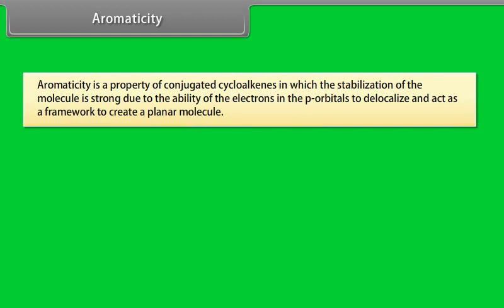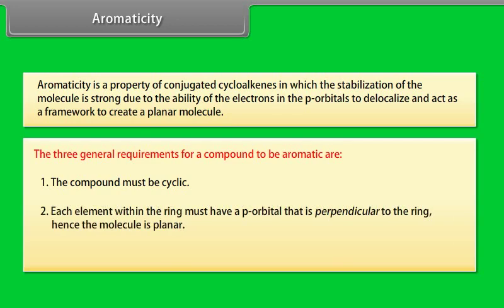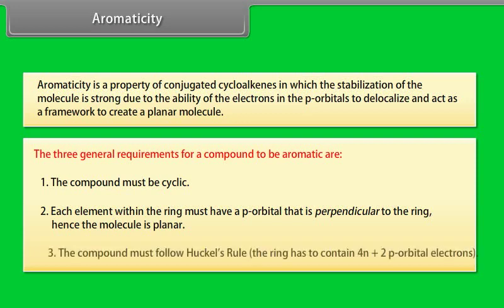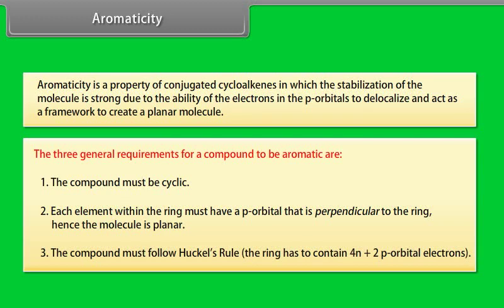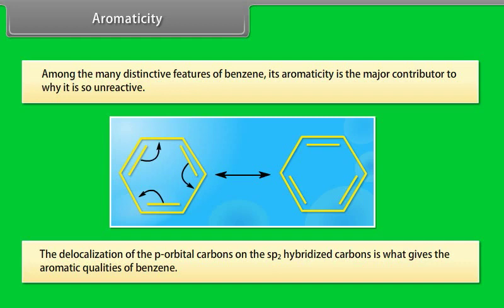Aromaticity. Aromaticity is a property of conjugated cycloalkenes in which the stabilization of the molecule is strong due to the ability of the electrons in the p orbitals to delocalize and act as a framework to create a planar molecule. The three general requirements for a compound to be aromatic are: 1. The compound must be cyclic. 2. Each element within the ring must have a p orbital that is perpendicular to the ring, hence, the molecule is planar. 3. The compound must follow Huckel's rule. The ring has to contain 4n plus 2 p orbital electrons. Among the many distinctive features of benzene, its aromaticity is the major contributor to why it is so unreactive. The delocalization of the p orbital carbons on the sp2 hybridized carbons is what gives the aromatic qualities of benzene.